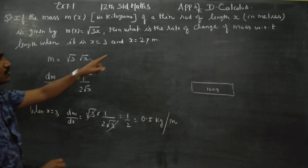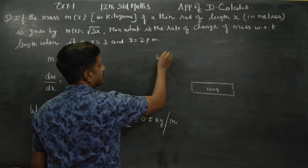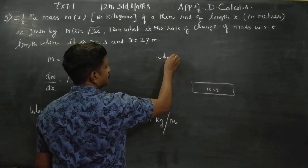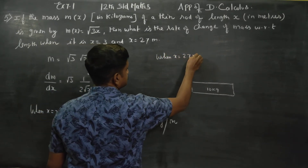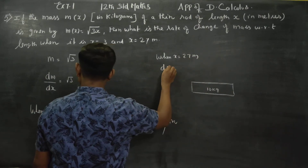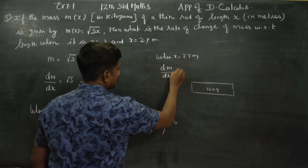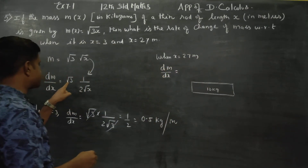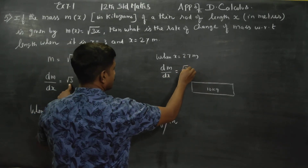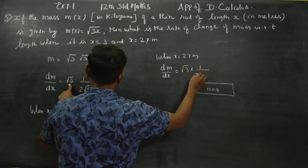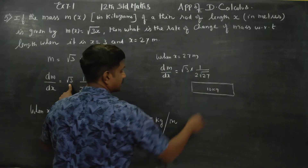When x is equal to 27 meters, we need to find dm/dx. We substitute into the formula: dm/dx = √3 · 1/(2√27).